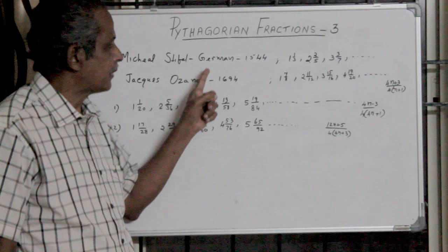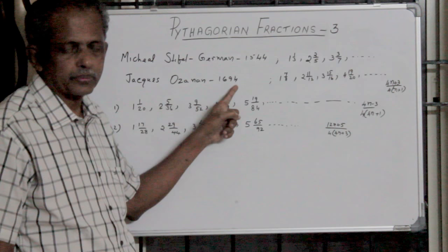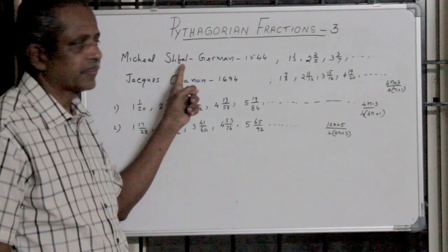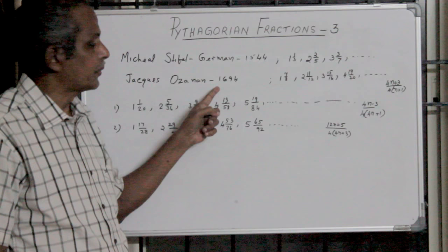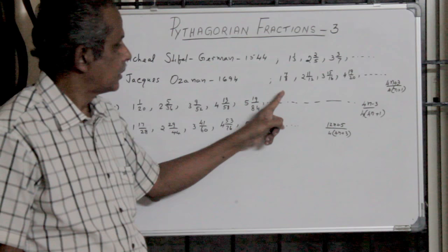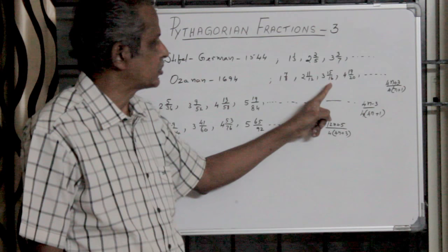He republished Michael Stiefel's essay including his own developments. The fractions are 1 and 7 by 8, 2 and 11 by 12, 3 and 15 by 16, 4 and 19 by 20, etc.